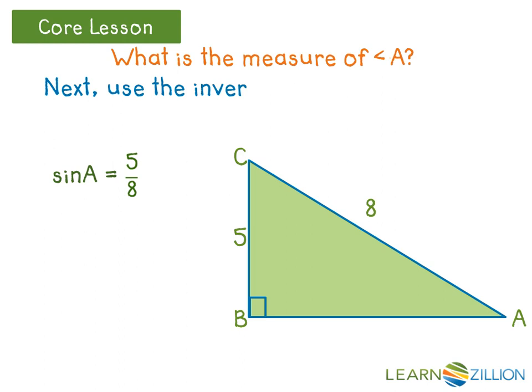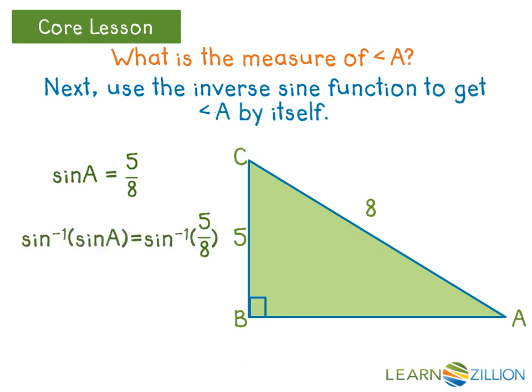Next, we must apply the inverse sine function to both sides of the equation to get angle A by itself. Since the inverse sine and sine are inverse functions that undo each other, we can simplify the equation to get A equals the inverse sine of 5 eighths. When we use a calculator to evaluate the inverse sine of 5 eighths, we can see that angle A is approximately 38.7 degrees.